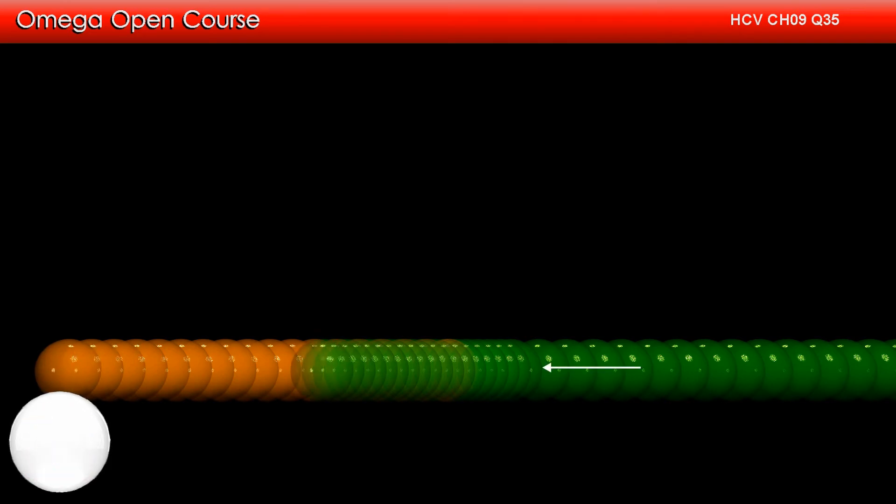Let the speed of the green ball after the collision be V1 and that of the orange ball be V2. As per conservation of momentum, M into V must be equal to MV1 plus MV2. Dividing both sides by mass, we get V is equal to V1 plus V2.